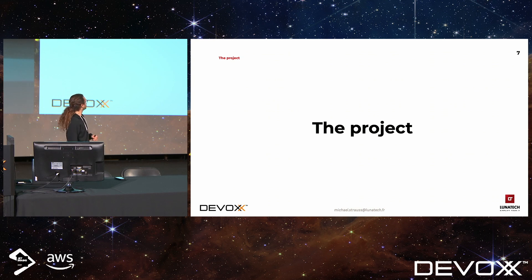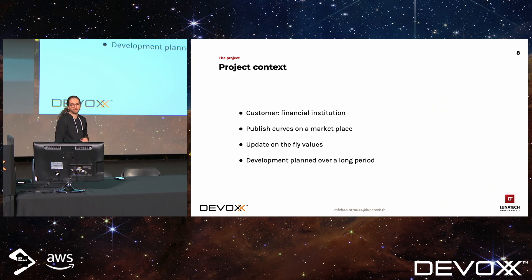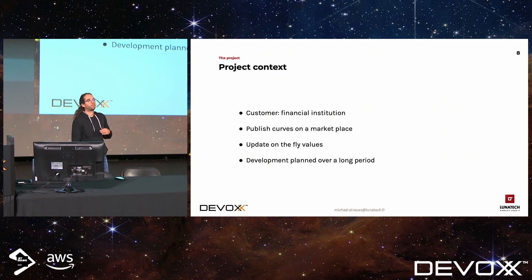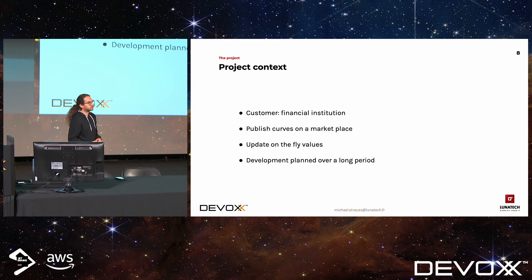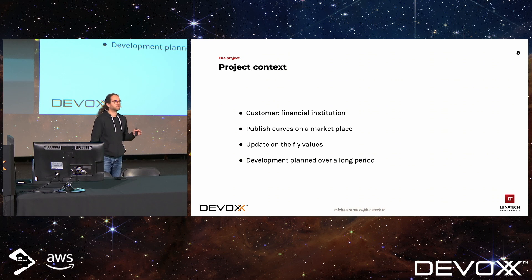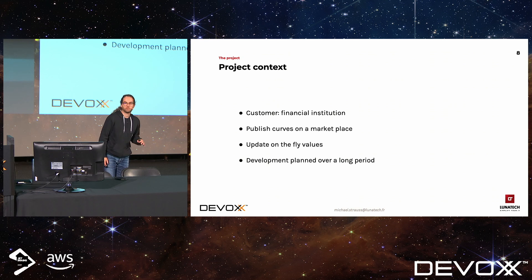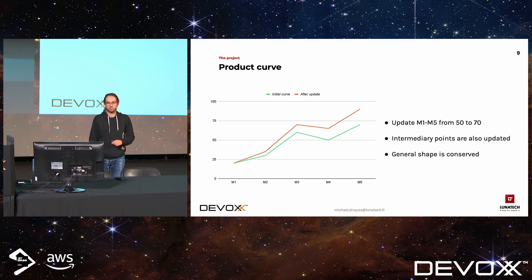So what is it in reality? We used Cucumber on a project, so I'll give a little background. We worked for a financial institution. One part of the product was listening to market prices on a trading platform, doing some computation and publishing a curve in real time, all day long. The project was not small — we worked on the first part for one year with a team of 12 developers, using regular Java, no fancy framework, just basic stuff.